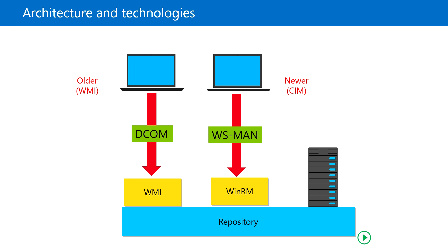You should be using CIM cmdlets instead of the older WMI cmdlets. CIM cmdlets use DCOM when querying the local computer, and they can use WSMAN for remote access. When querying local computers, DCOM protocol is used; when querying remote systems, WSMAN is used. CIM cmdlets can use either DCOM or WSMAN for session-based connections to remote computers, so for remote computers you can choose either protocol based on the command you use.